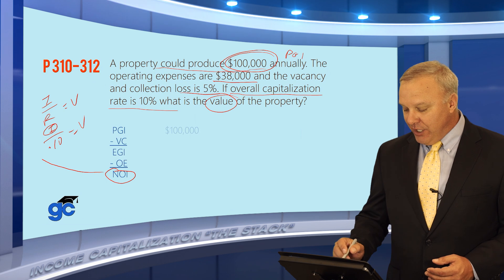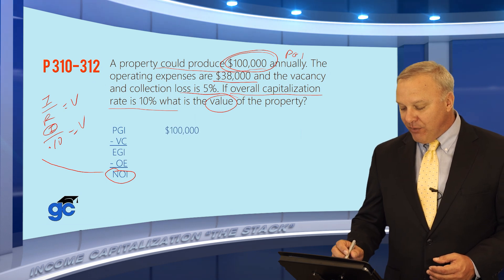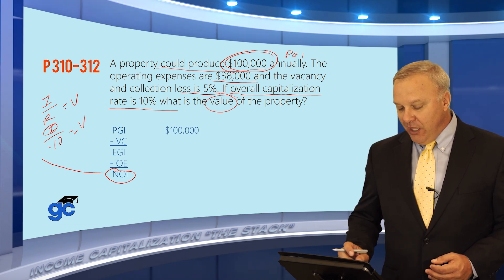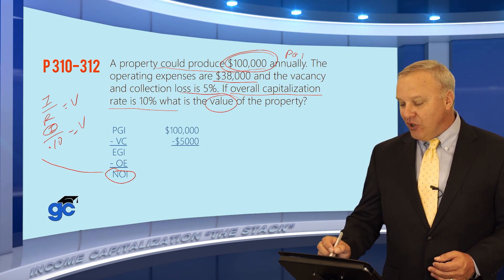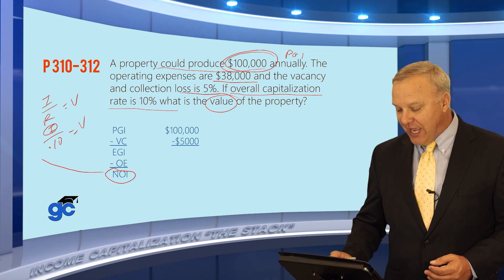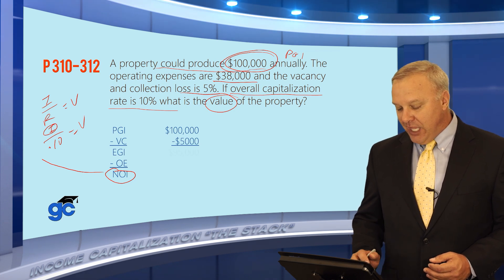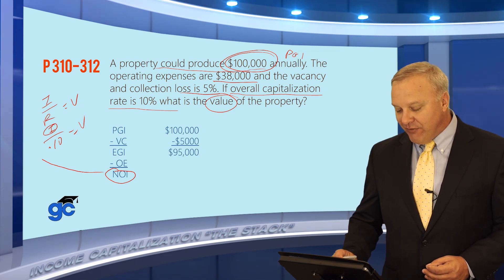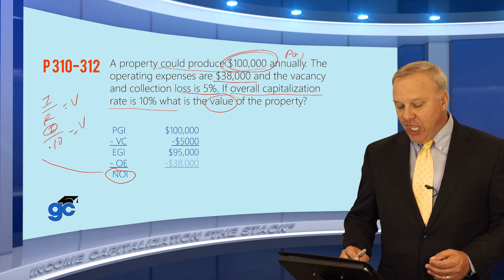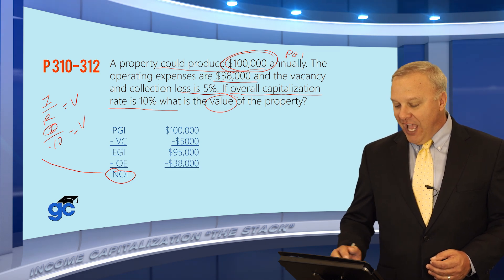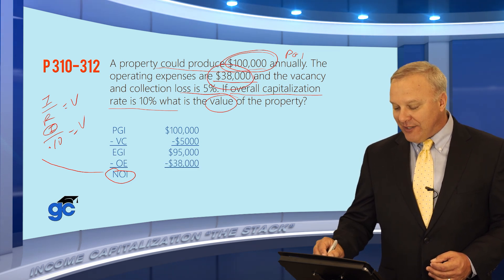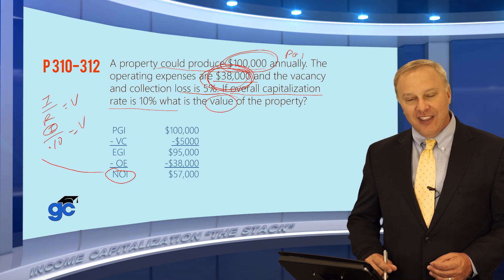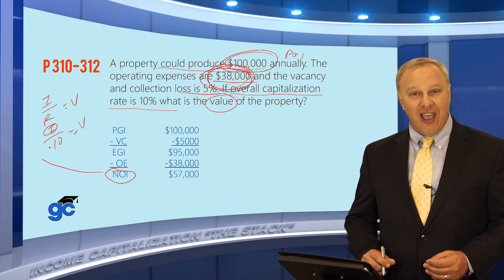Taking this one step further, we put the numbers in. PGI is $100,000. Vacancy and collection losses were 5%, or $5,000. We subtract, giving us an effective gross income of $95,000. We then subtract the operating expenses, which were given in the question at $38,000, and we find the NOI is $57,000.